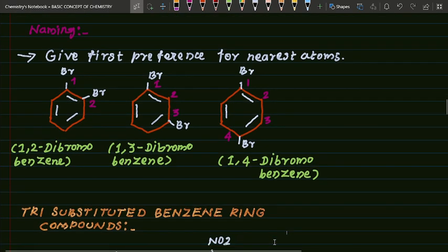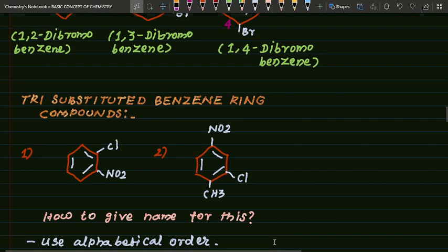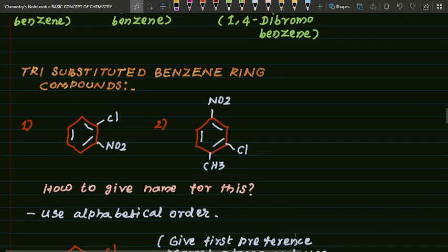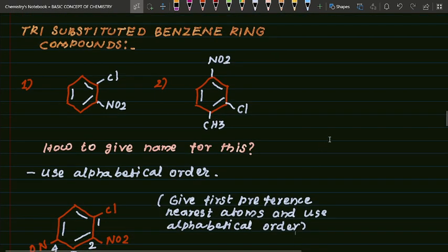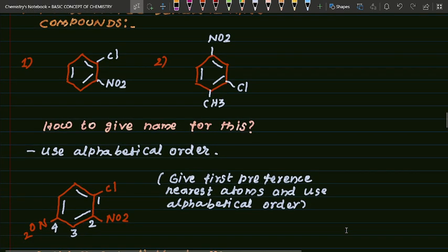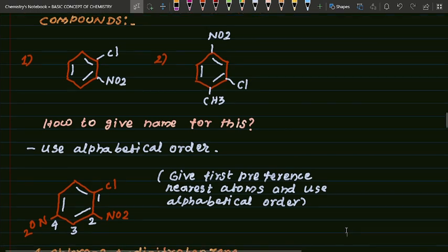Now see trisubstituted benzene ring compounds. Here we have benzene with one chlorine, one methyl, and one nitro group. To give the name: give first preference to the nearest atom and use alphabetical order.